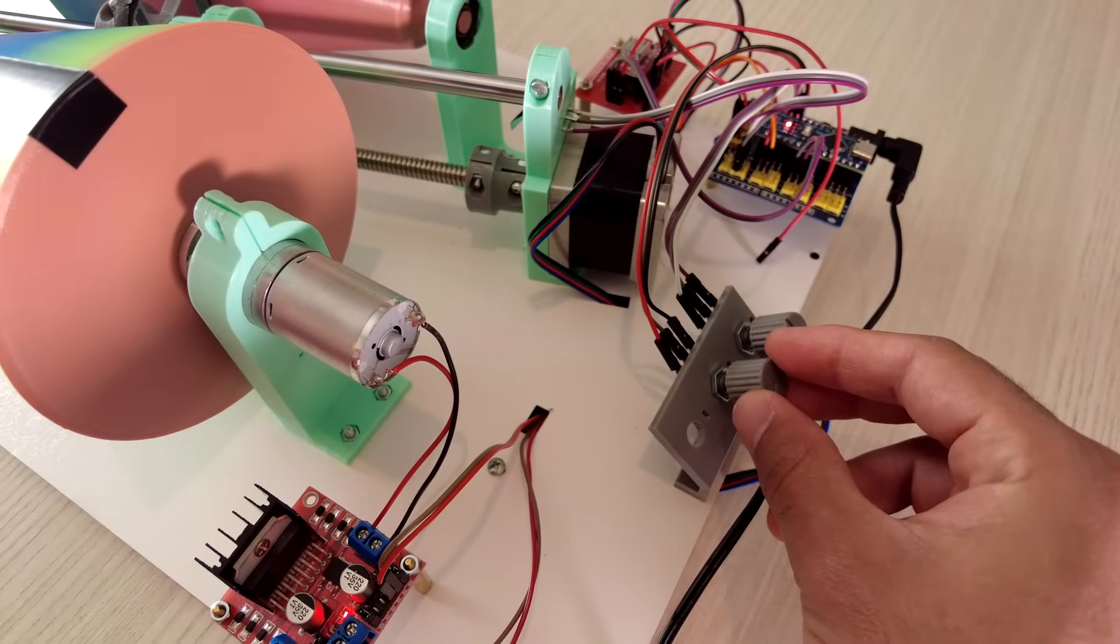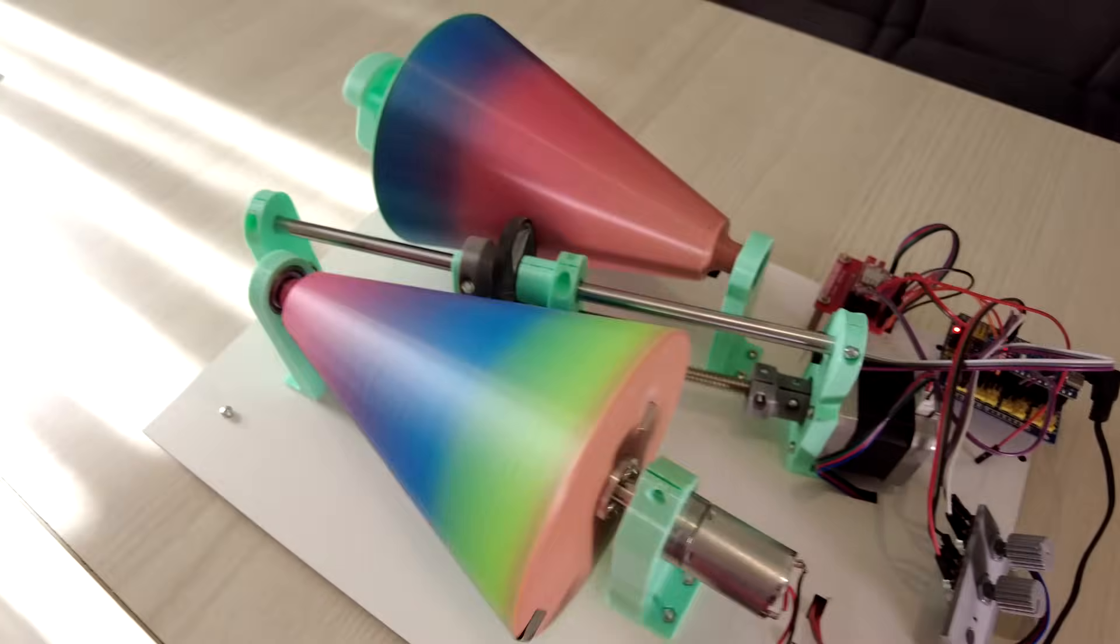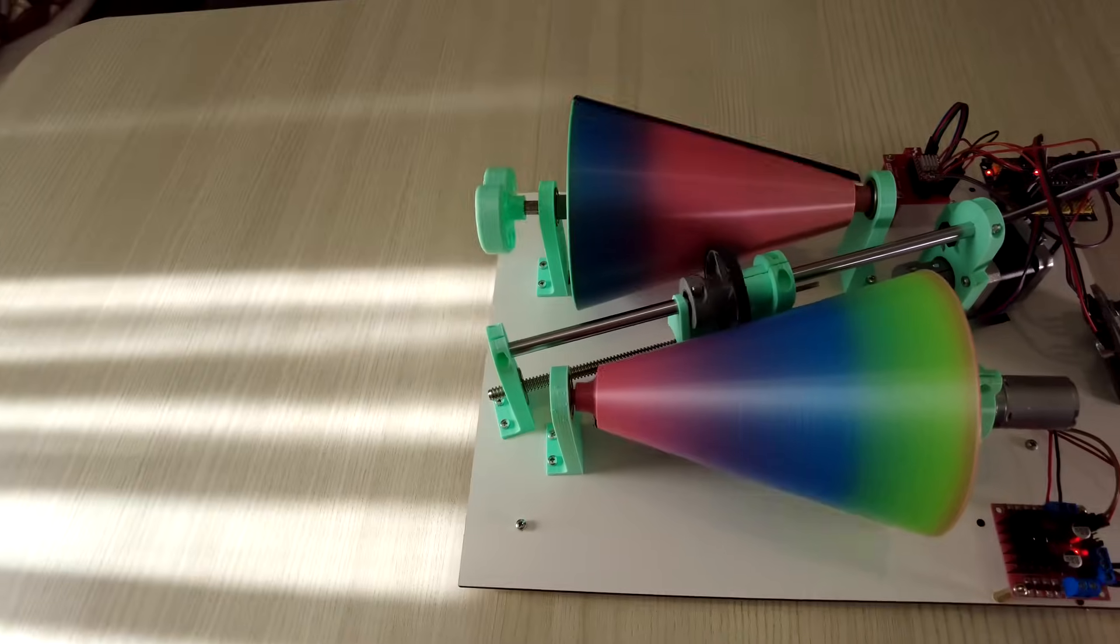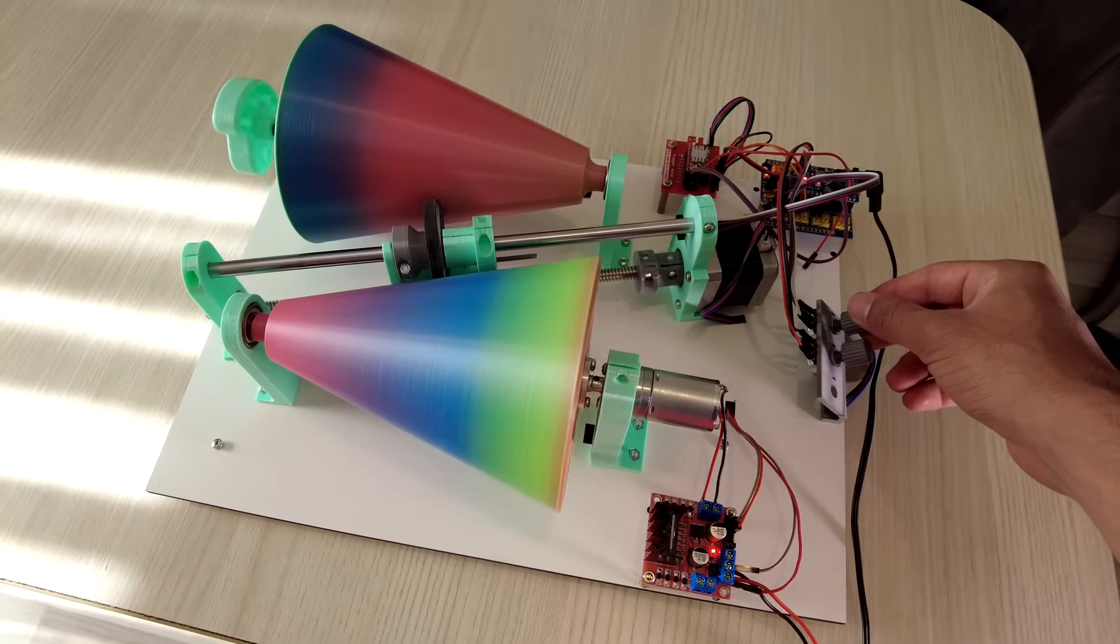Let's test it. First, we start the motor. Then, we can change the wheel's position. When the wheel is in the center, both cones spin at the same speed, but when it goes to the edge, the second cone slows down significantly.